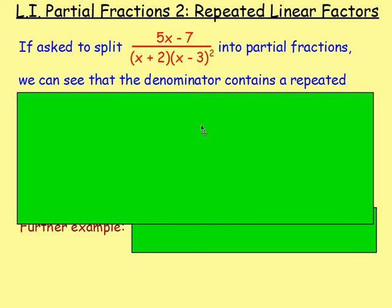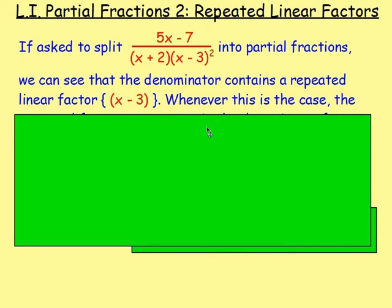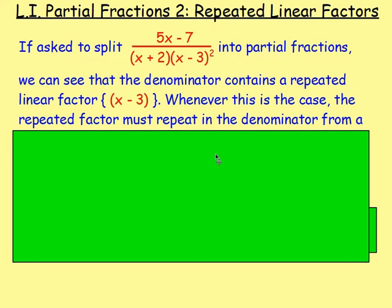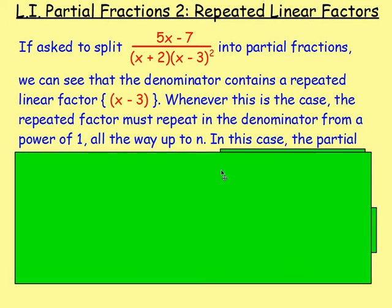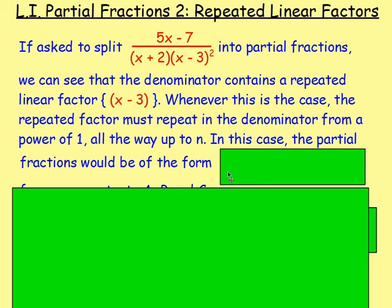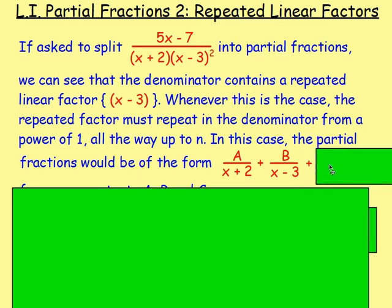So what is that all about? You can see here that the denominator contains a repeated linear factor. We've got x take away 3 repeated — we've got x take away 3 squared, which means we'd have (x+2)(x-3)(x-3), so the x take away 3 is repeated. Whenever this is the case, if we split that into its partial fractions, we must repeat x take away 3 in the denominator from a power of 1 all the way up to n. So in this case, x take away 3 goes from the power of 1 up to the power of 2.